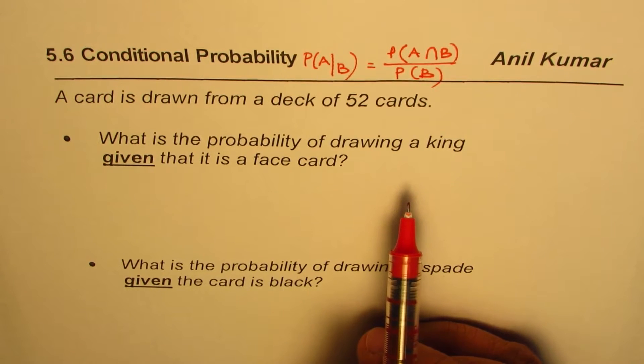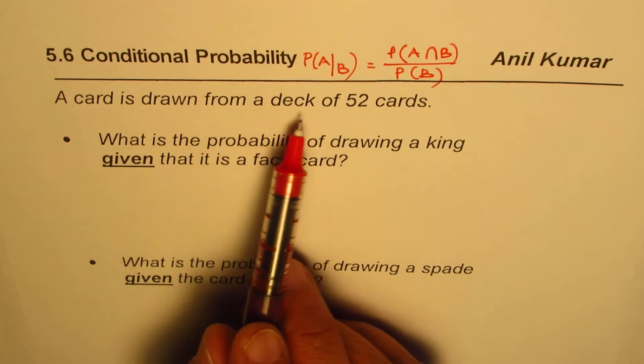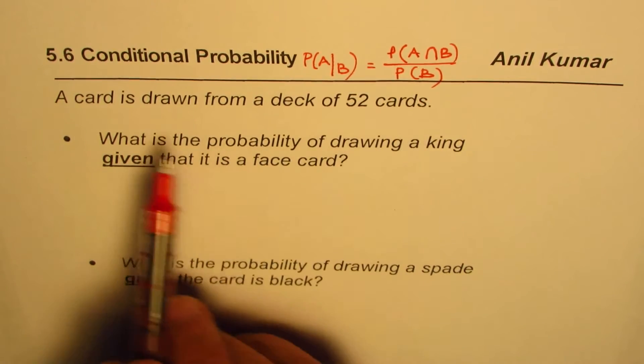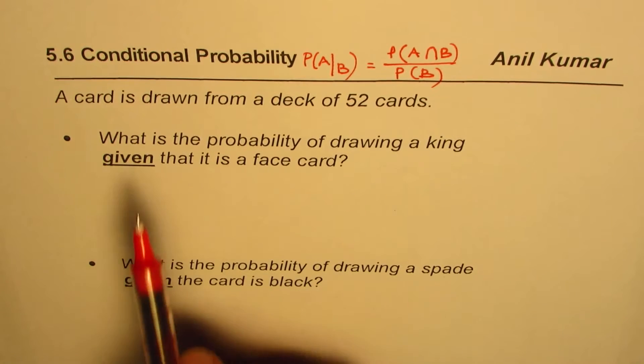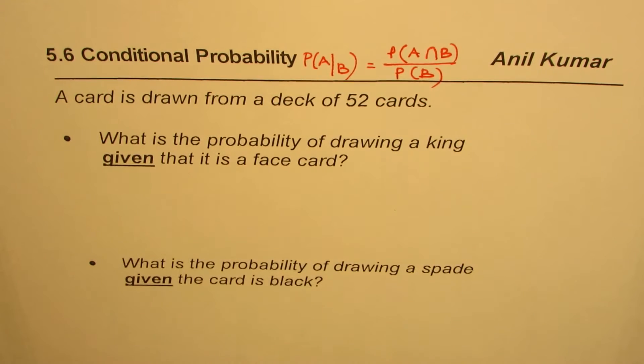basic understanding. Let's look into the question. It says a card is drawn from a deck of 52 cards - straightforward question. Now it says: what is the probability of drawing a king given that it is a face card?